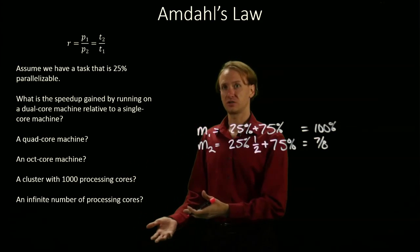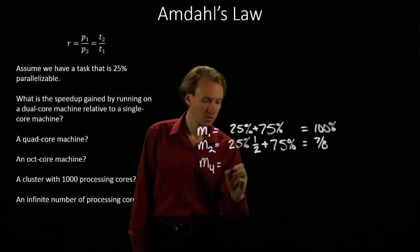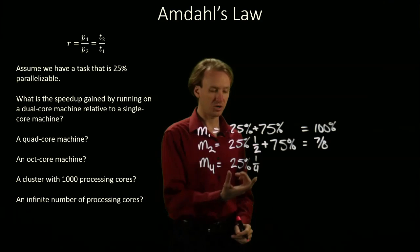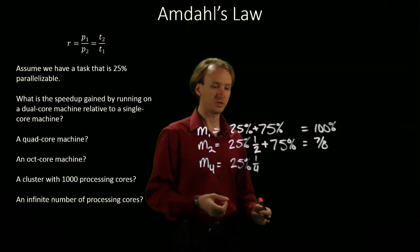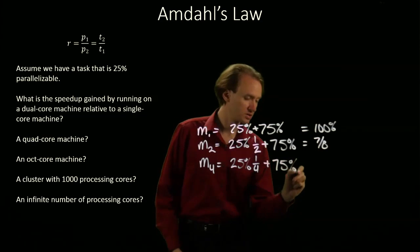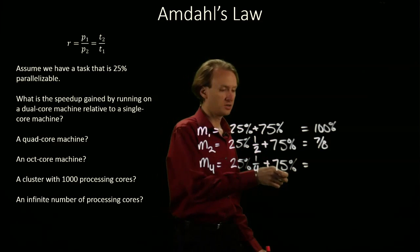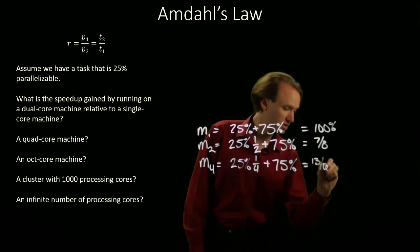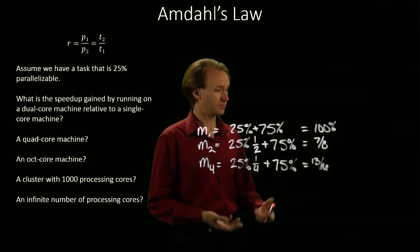Next, when I increase that to run on a 4 core machine, I've got 25%, and the parallelizable code will only take a quarter of the time it did on the single core machine. But again, the non-parallelizable code is still unaffected. Now I have 1/16 plus 3/4, which gives me 13/16. The improvement is getting smaller.